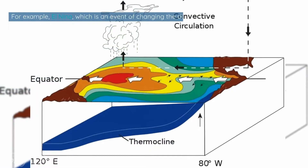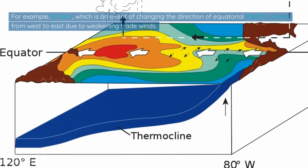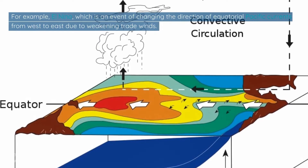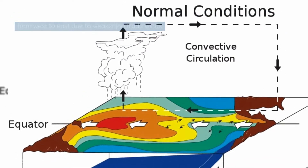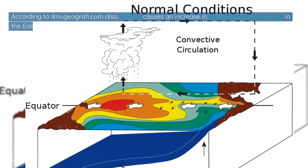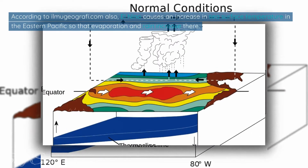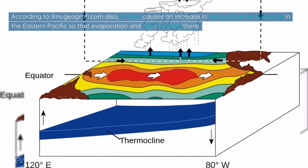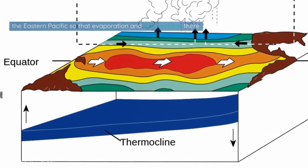For example, El Niño is an event where the direction of equatorial Pacific currents shifts from west to east due to weakening trade winds. According to ilmugeography.com, El Niño causes an increase in sea surface temperature in the eastern Pacific so that evaporation and rainfall increase there.